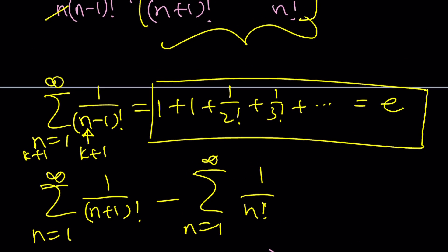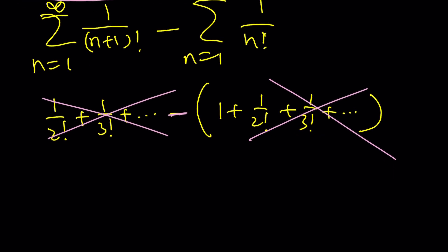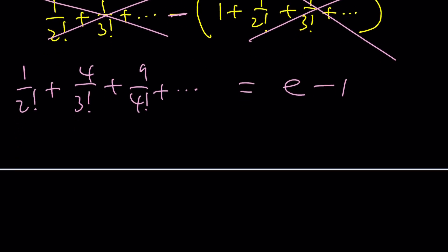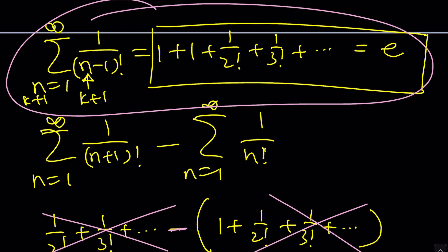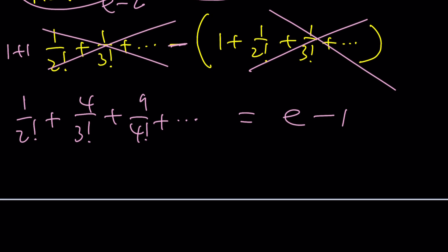So we have this minus 1, which means the answer is e minus 1. In other words, 1 over 2 factorial plus 4 over 3 factorial plus 9 over 4 factorial, and so on, is the same as e minus 1. You can also think of it this way. You can look at each sum separately. For example, this one is missing 1 twice, so that's e minus 2. And this one is only missing 1, which is e minus 1. The difference is negative 1 because e minus 2 is smaller than e minus 1. So as a result, this becomes e minus 1.